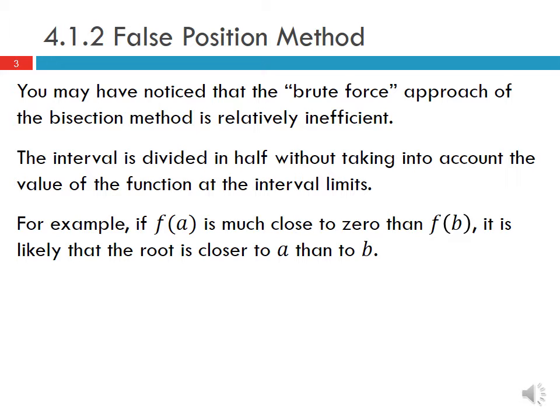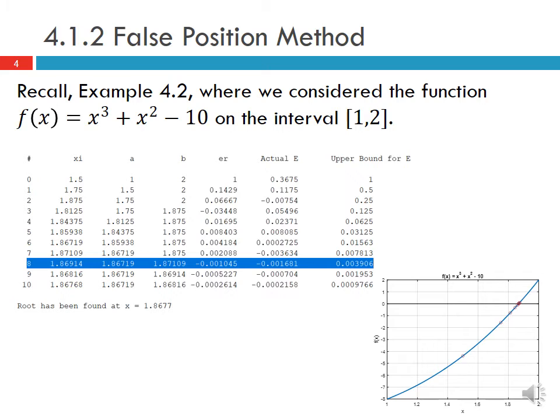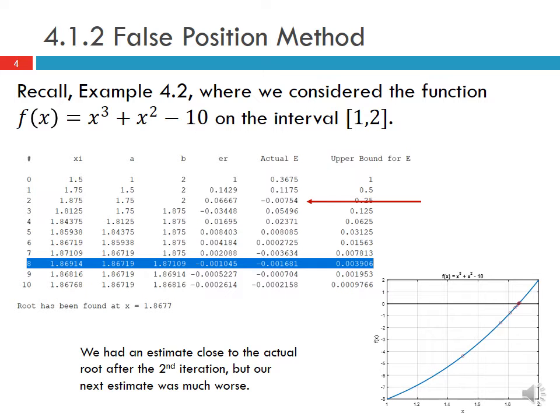If you recall Example 4.2 where we considered the function f(x) = x³ + x² - 10 on the interval from 1 to 2, this was the result from the bisection method where we were comparing with the actual error as well as the relative error. You can see that we did have an estimate close to the actual root after only the second iteration, but our next estimate was much worse because we did not take advantage of the idea that if the root is close to one of the limits, we should choose a better estimate than right in the middle.